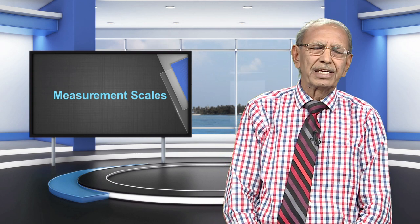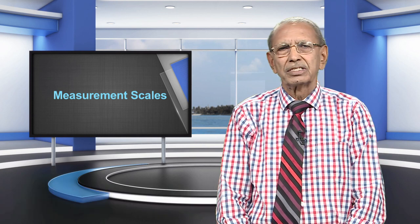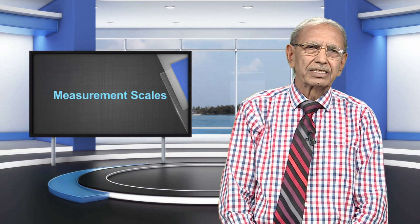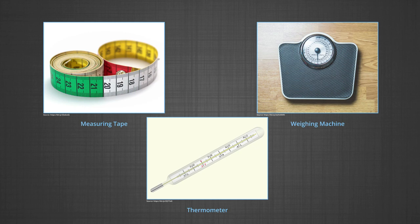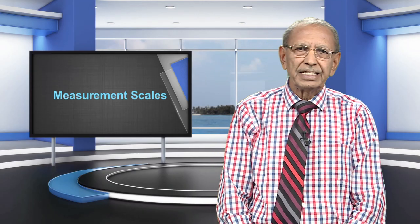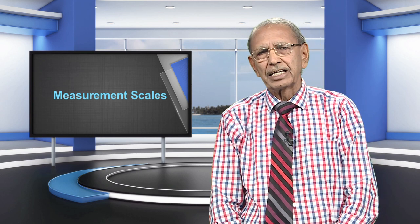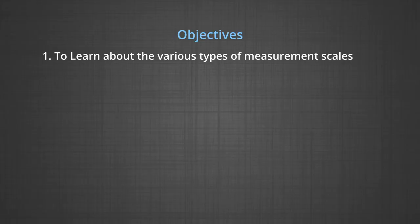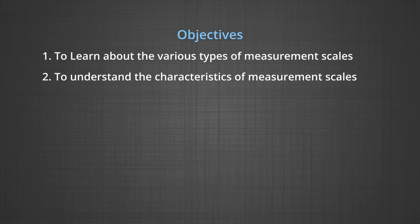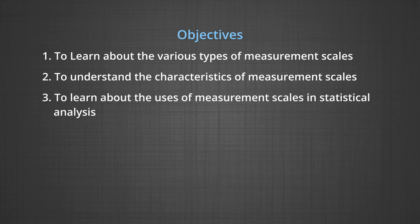The module we are going to discuss today is on measurement scales. Students use a lot of measuring instruments in their life, including measuring tapes, weighing machines, thermometers, and many other things. We are going to discuss these and many more measuring scales as used in research. The main objectives of this module are: first, to understand the various types of measurement scales; second, to understand the characteristics of measurement scales; and third, to learn about the uses of measurement scales in statistical analysis.